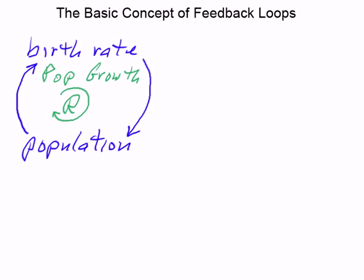Now let's see what would happen if we put this loop in a simulation model and ran it. Let's draw a graph right over here to represent what the dynamic behavior of this system would look like. The population would be on the vertical axis.